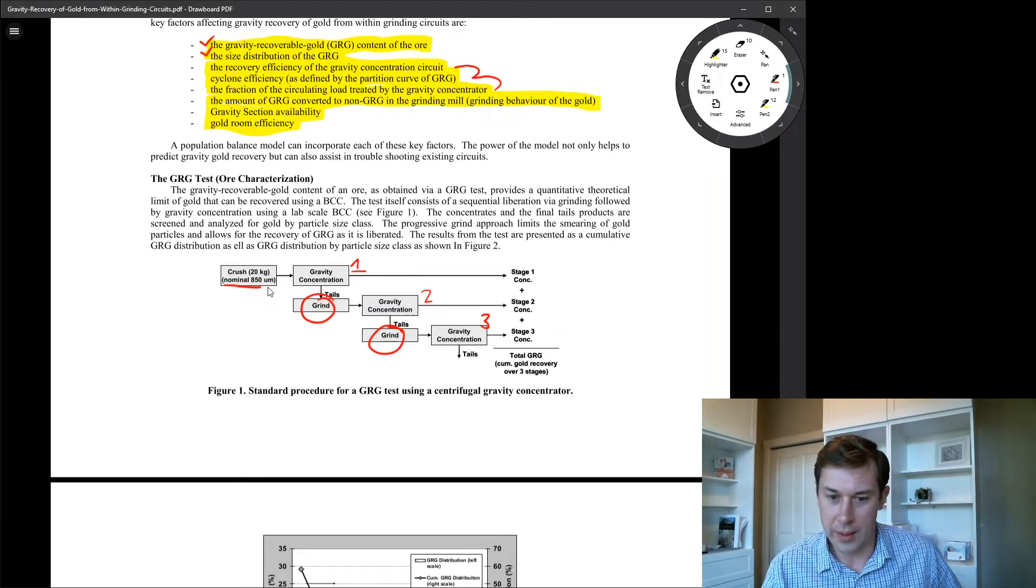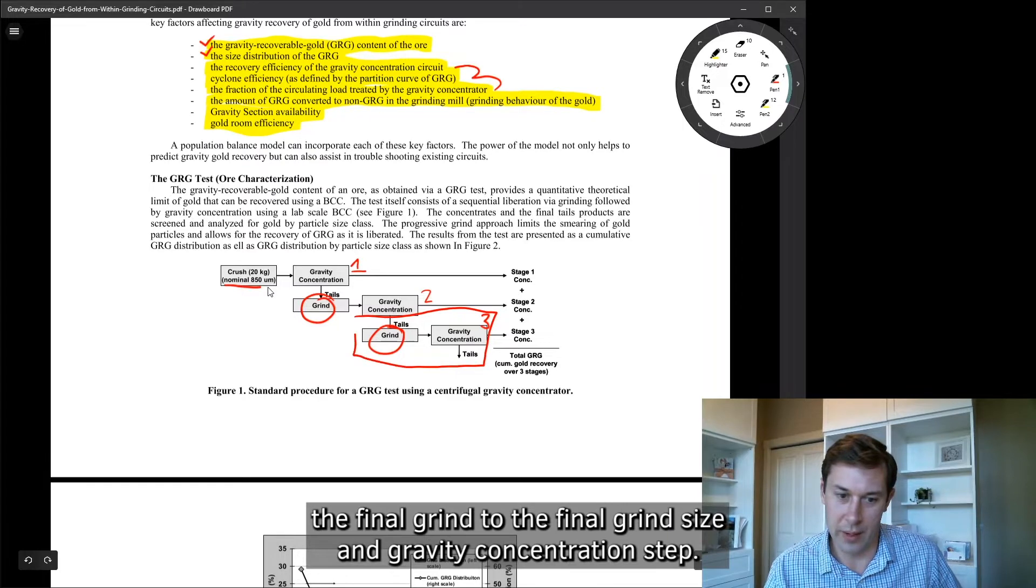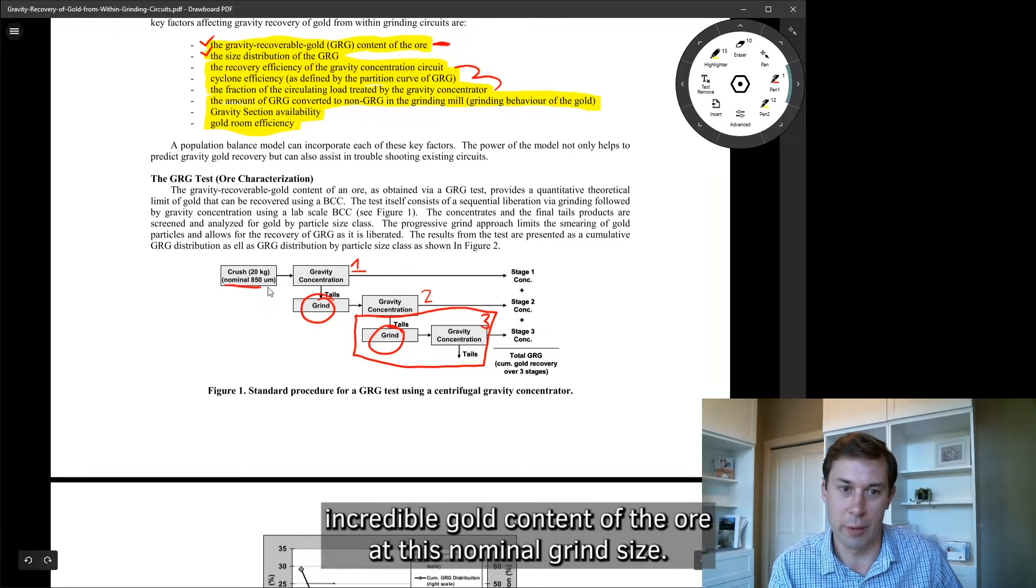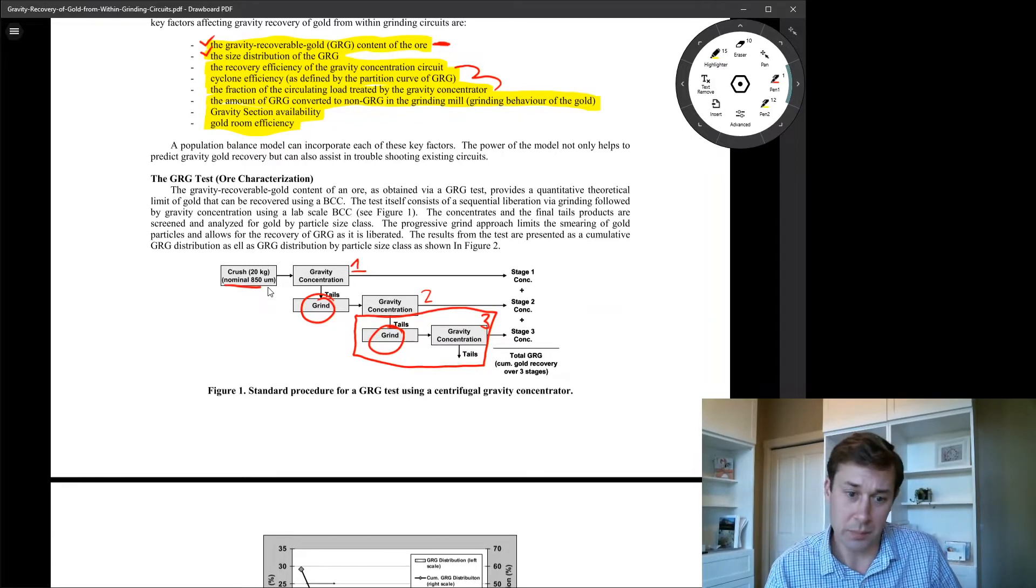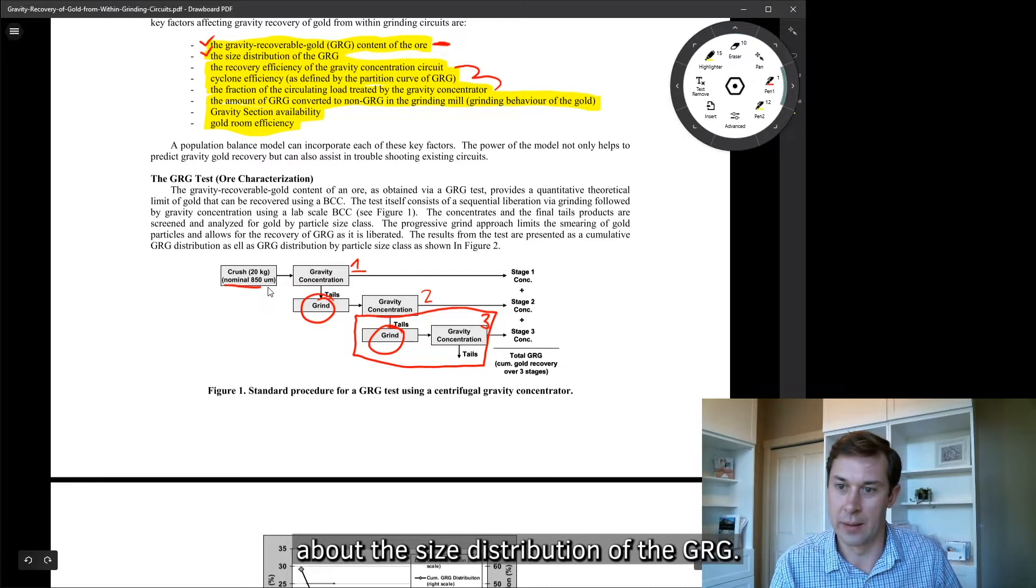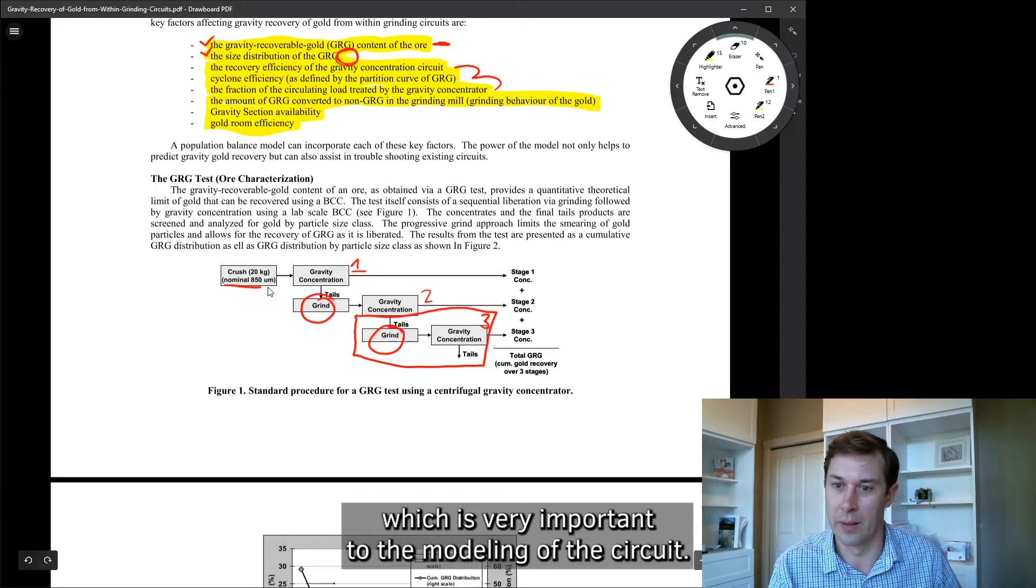So why do we do this? So if we were only going to do, let's say this part, the final grind, so the final grind size and a gravity concentration step. At that point, all we would get is the gravity recoverable gold content of the ore at this nominal grind size, which is fine. But with only that, we lack information about the size distribution of the GRG. We'd be missing out on this information here, which is very important to the modeling of the circuit.